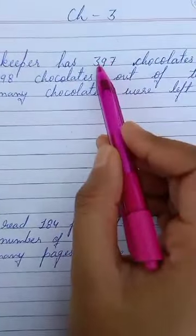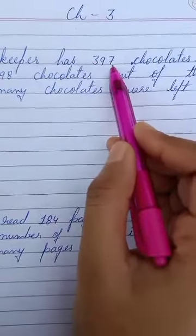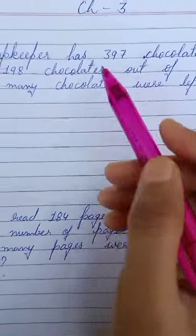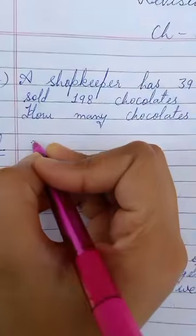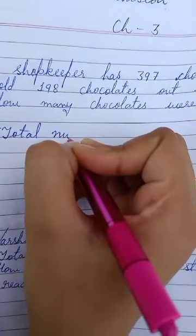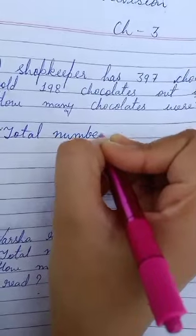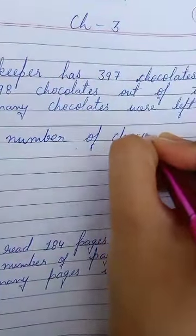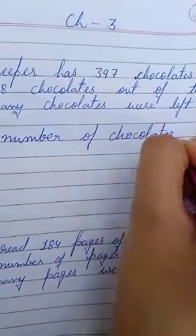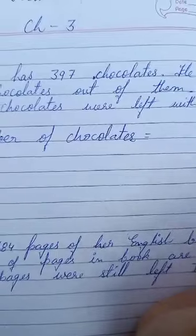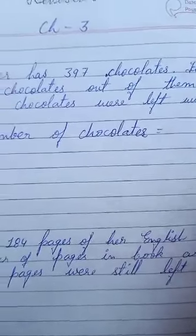First line, first number - total number of chocolates which shopkeeper has. Total number of chocolates, you can write: shopkeeper has equal to 397 chocolates. So here I have this total number of chocolates 397.